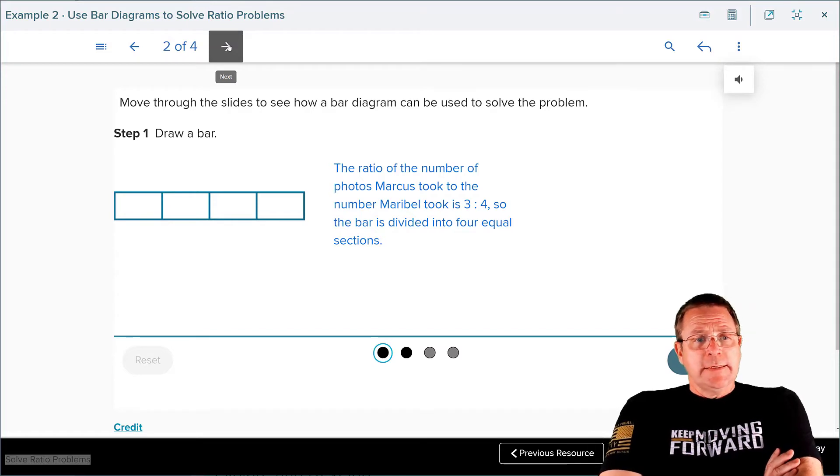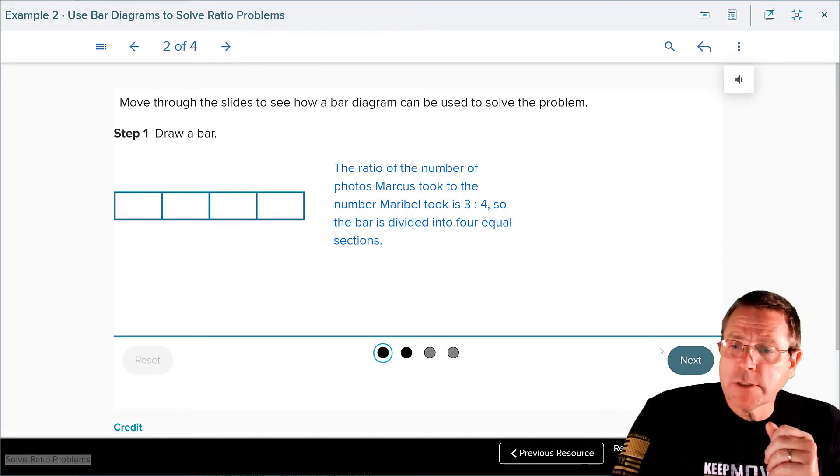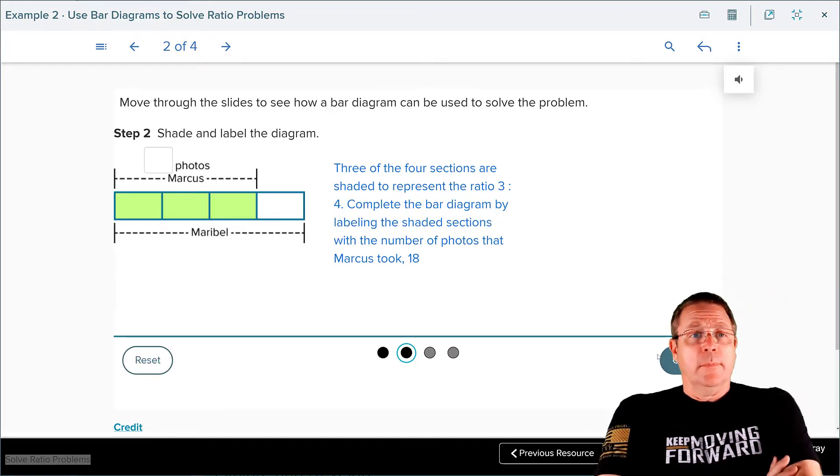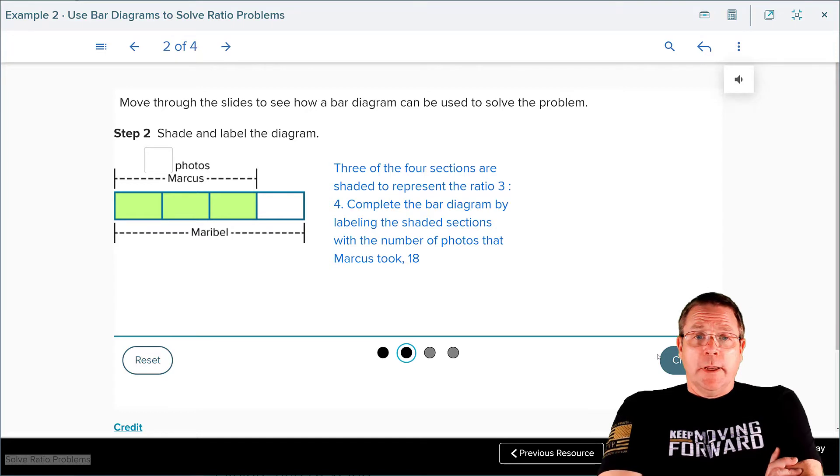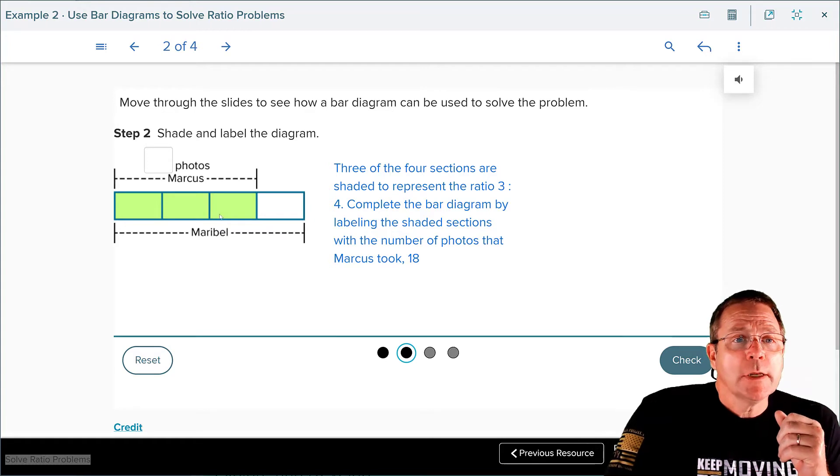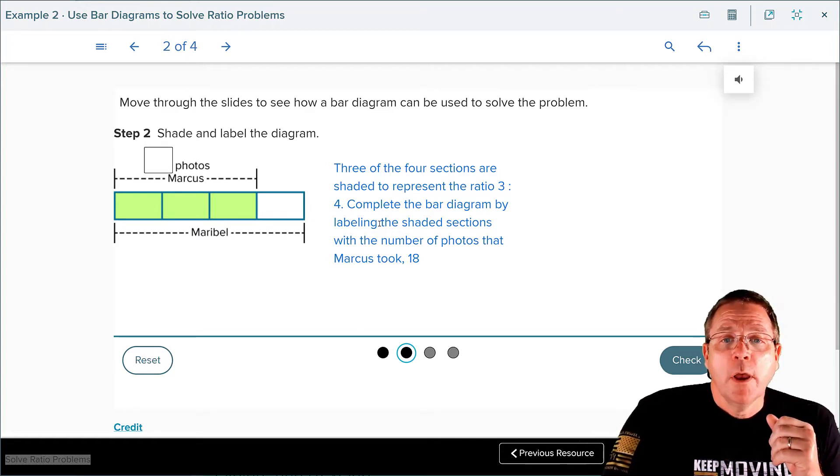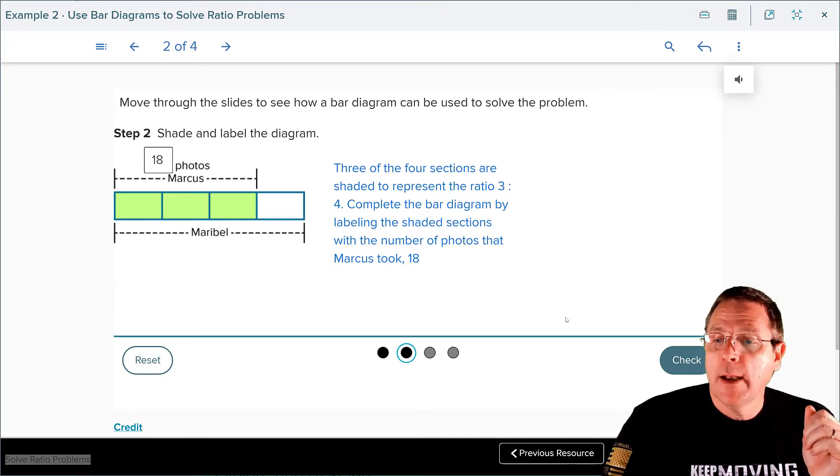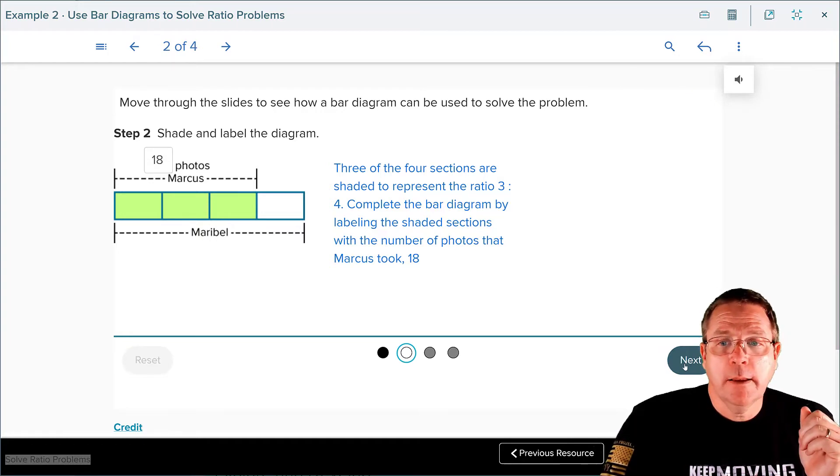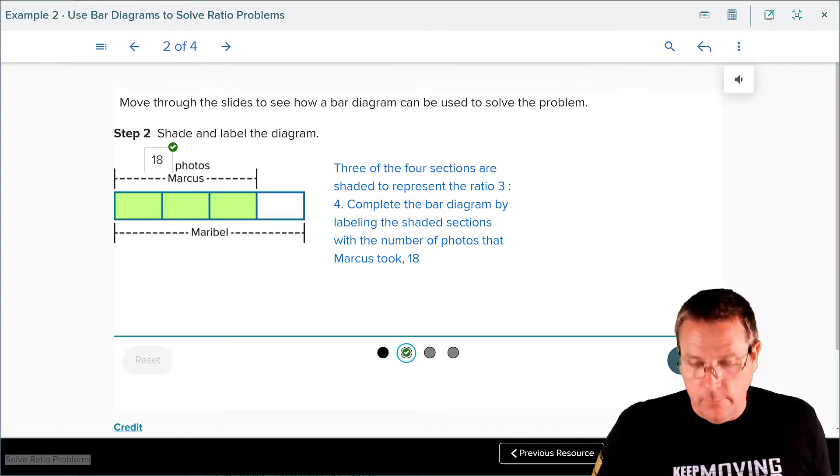First thing they did is they drew a bar diagram. It broke down into four sections and of those four sections three of them belong to Marcus while four of them belong to Maribel. Now they want you to complete the bar diagram by labeling the shaded sections with the number of photos that Marcus took which is 18. We're going to put in the 18 and hit check. And it checked good. Excellent.